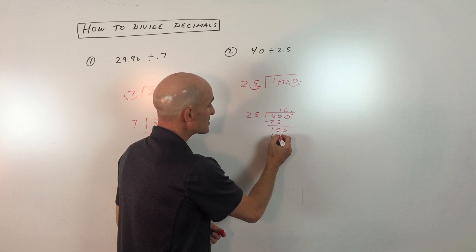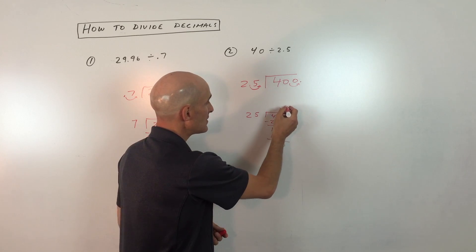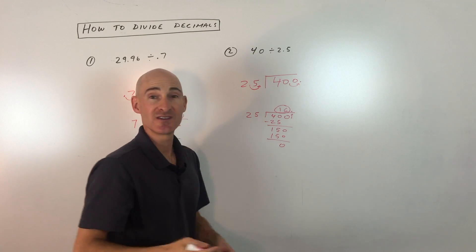So 6 times 25 is $1.50. Subtract. Zero remainder. Our final answer is 16.